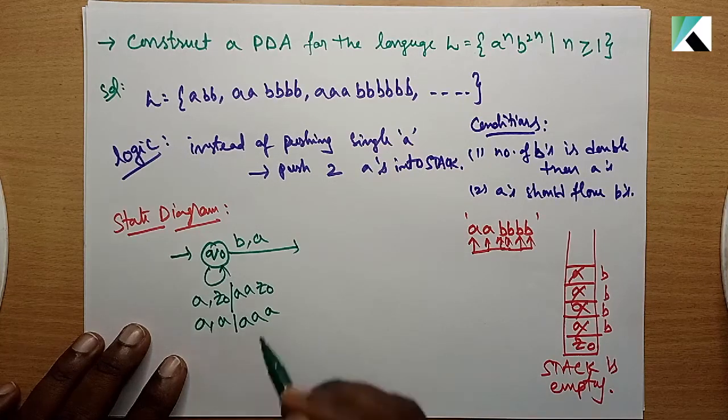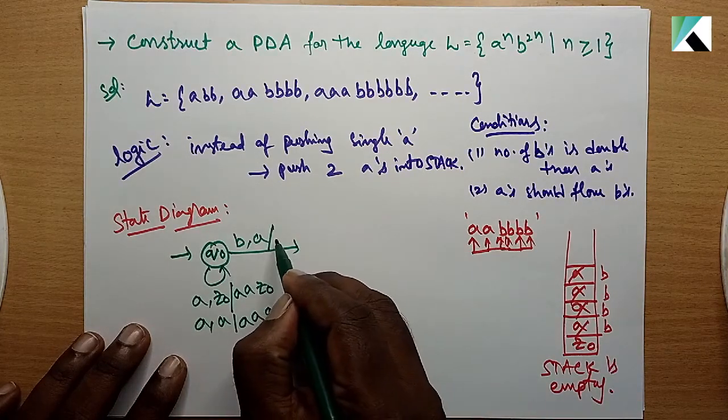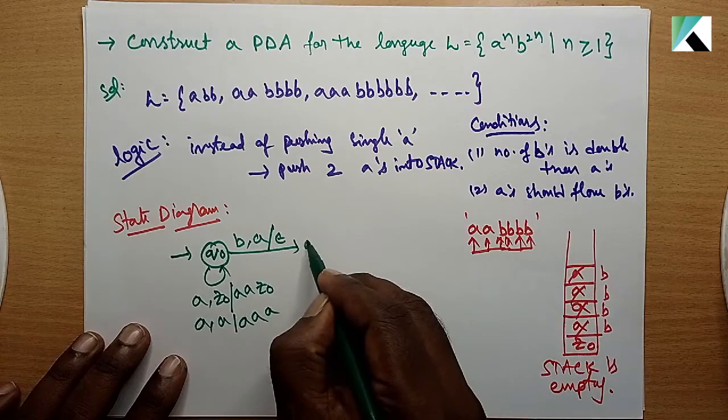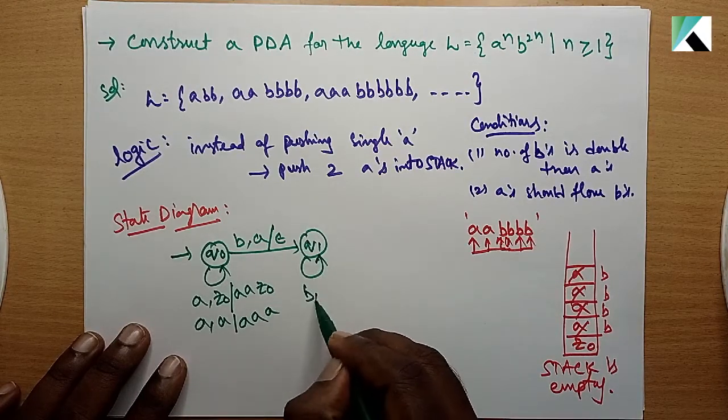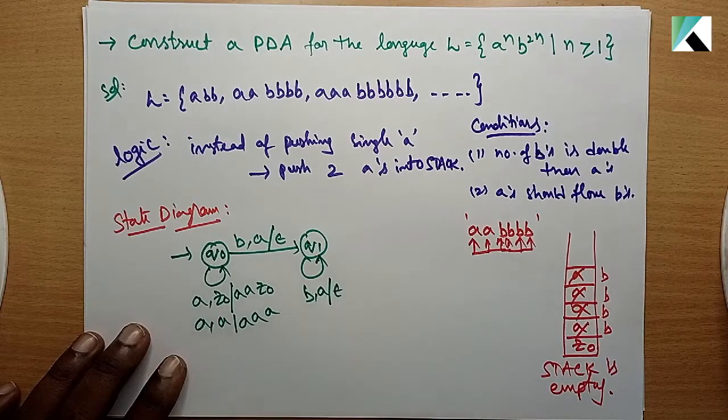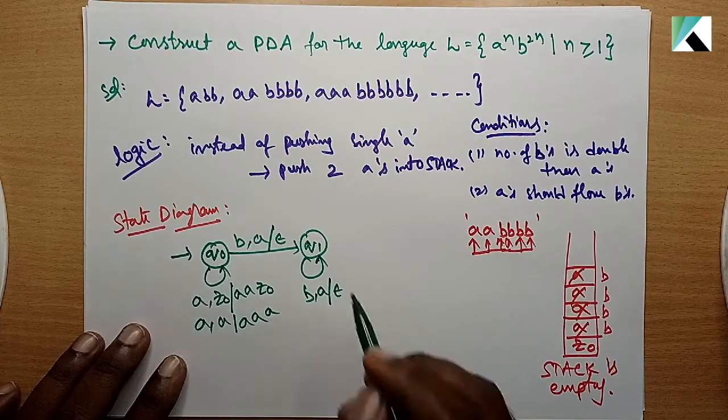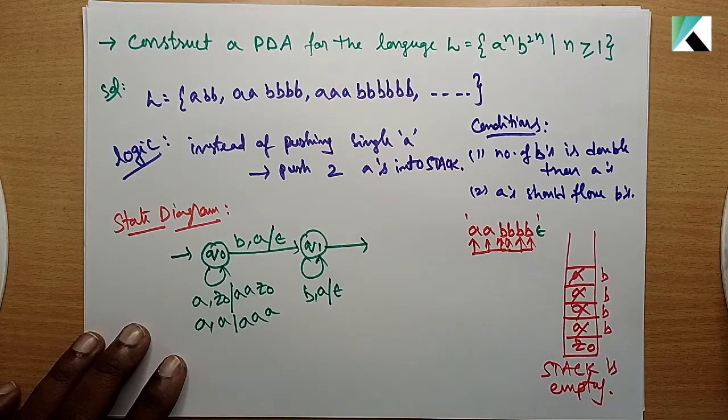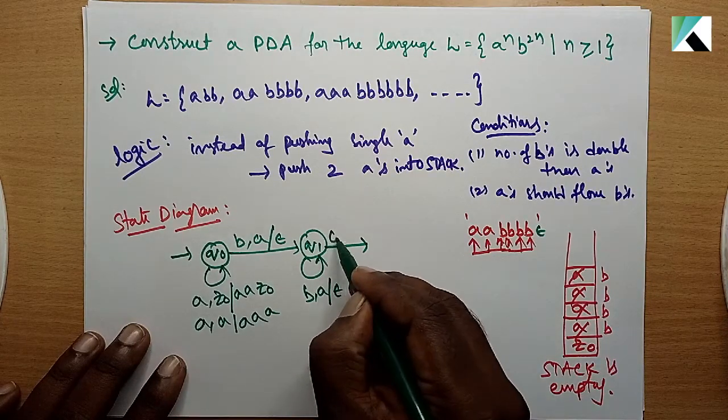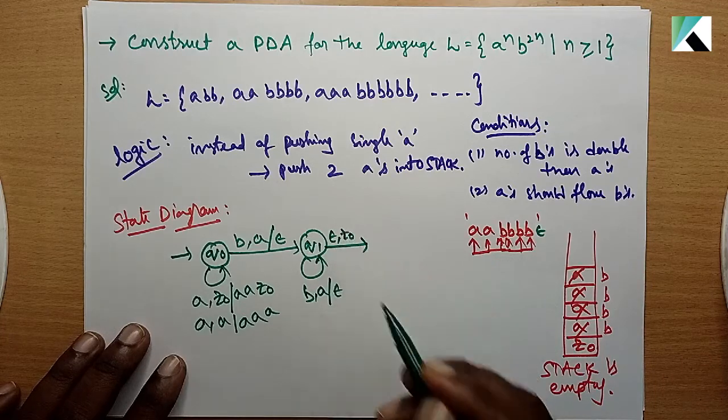When b appears in the input and a is on top of the stack, perform the pop operation and move to q1 state. In q1, for any number of b's with a's on the stack, keep performing pop operations. When there are no more strings at all,